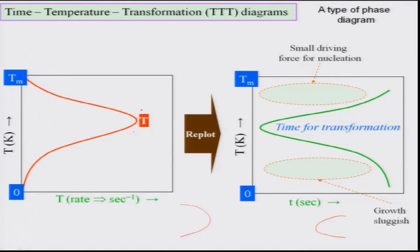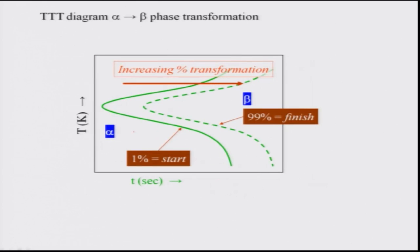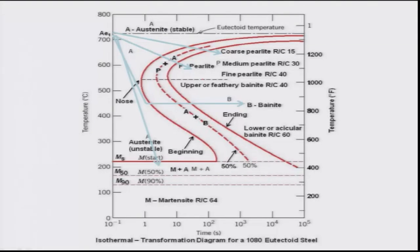When I re-plot temperature versus time, the rate curve gets converted into the C-curve shown in the TTT diagram. The X axis changes from inverse seconds (transformation rate) to seconds (time). That is how mathematically the transformation can be plotted, because transformation depends on both temperature and time. The 1% line is the start and the 99% line is the finish for a particular phase such as pearlite or cementite.